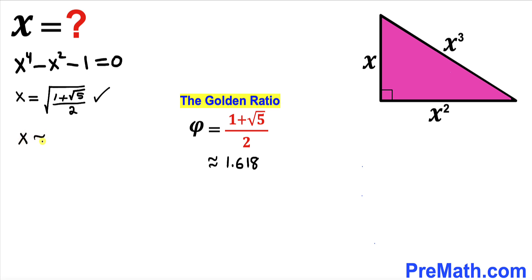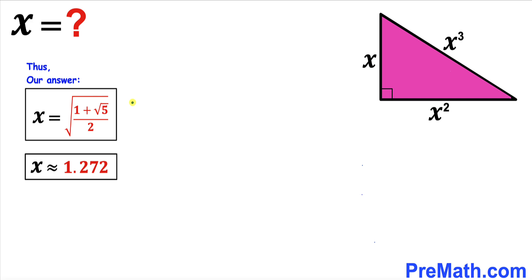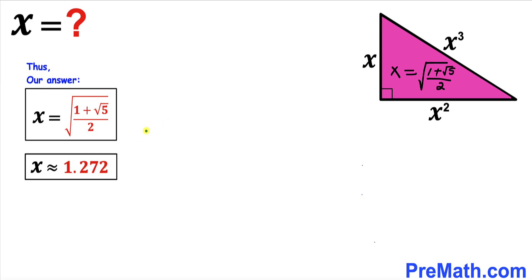So x equals the square root of (1 plus square root of 5) all over 2, which is the square root of the golden ratio. After all the calculations and manipulations, our final answer is x equals the square root of (1 plus square root of 5) all over 2. Thanks for watching and please don't forget to subscribe to my channel for more exciting videos.